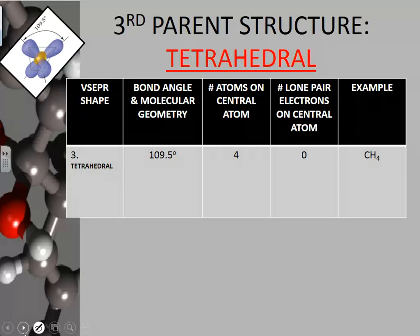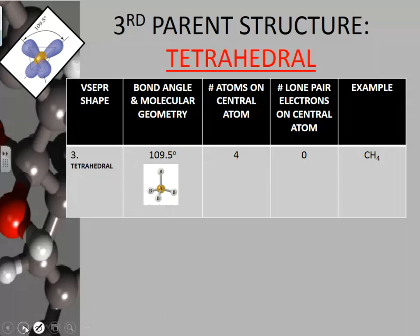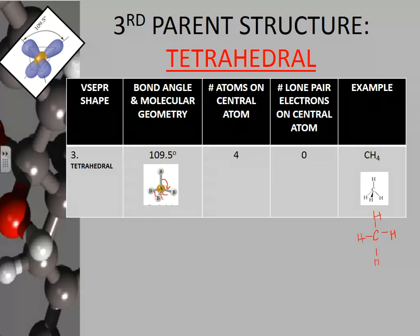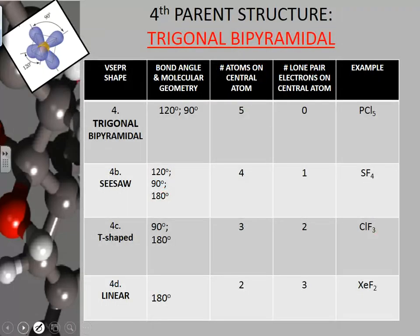The next parent structure is tetrahedral, with a bond angle of 109.5 degrees. Even though on paper you're going to draw it where it looks more like a T — so you would probably draw methane that way — understand there's no 90-degree angle here. It looks 90 degrees on paper, but the bonds actually space out evenly, and all bond angles around a tetrahedral are 109.5 degrees. Tetrahedral has four atoms on the central atom and no lone pairs.